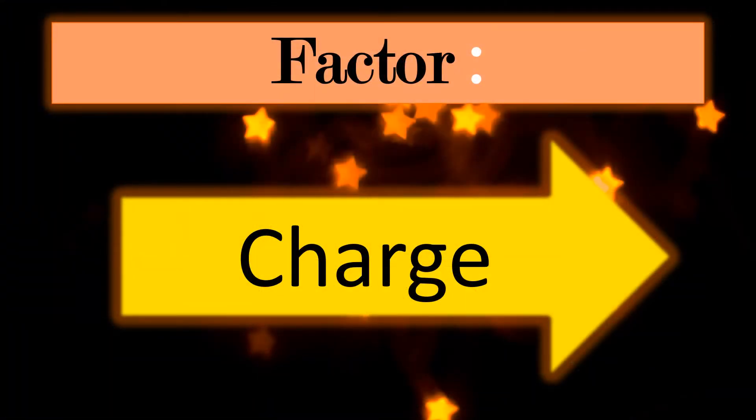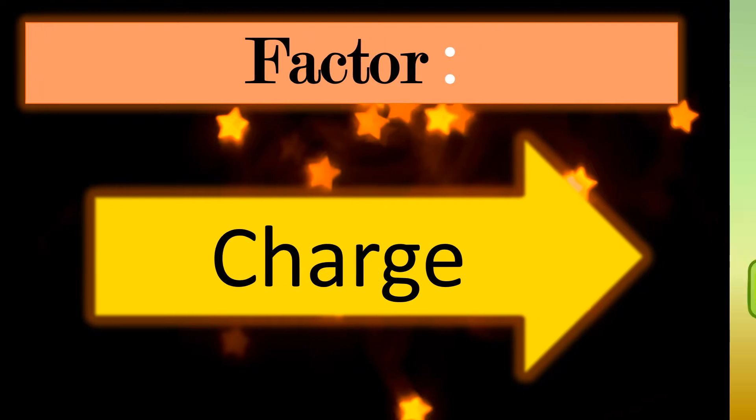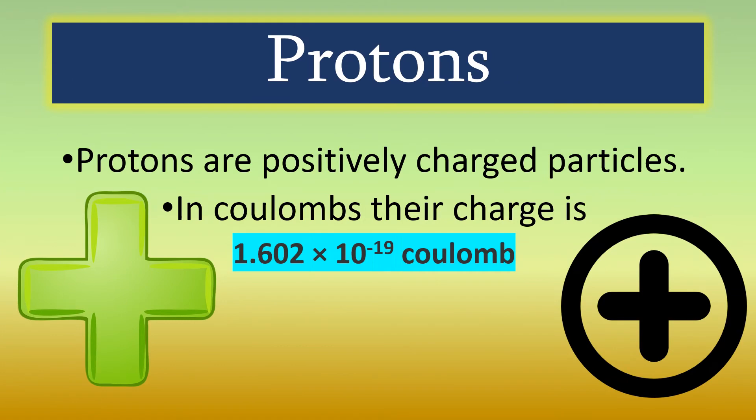The first factor we are going to be differentiating them by is their electric charges. Now, protons are positively charged particles. In coulombs, which is the unit of electrical charge, their charge is 1.602 × 10^-19 coulombs.